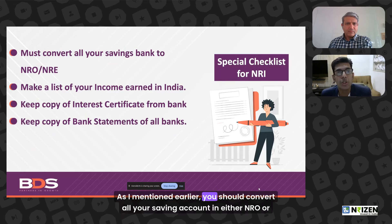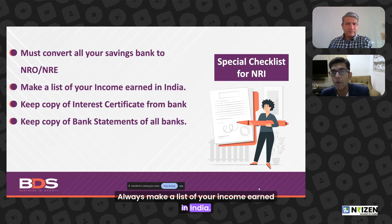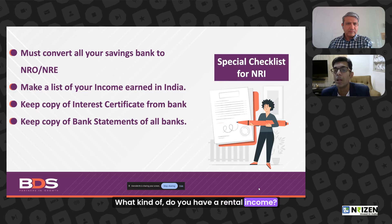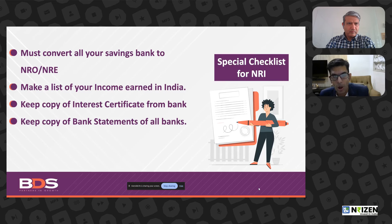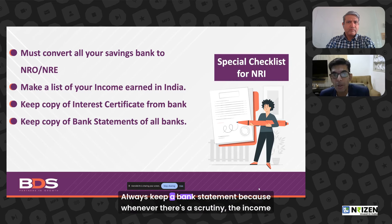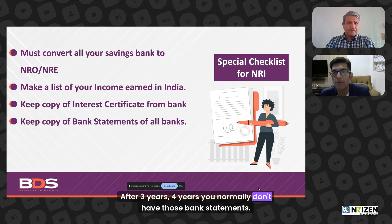Convert all your savings accounts to either NRO or NRE accounts — failing to do so is a FEMA violation. Always make a list of your income earned in India, such as rental income, and share it with your chartered accountant to file returns properly. Always ask for an interest certificate from your bank and keep bank statements, because during a tax scrutiny the income tax department asks for all bank statements, and after three or four years you normally don't have them.